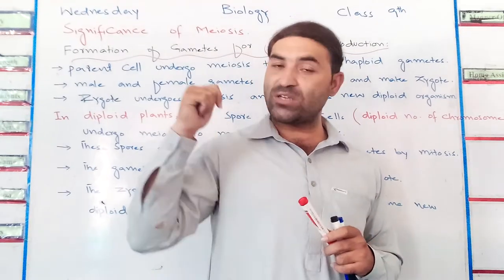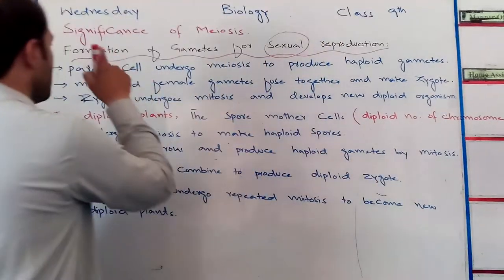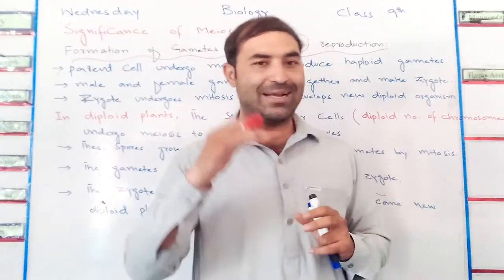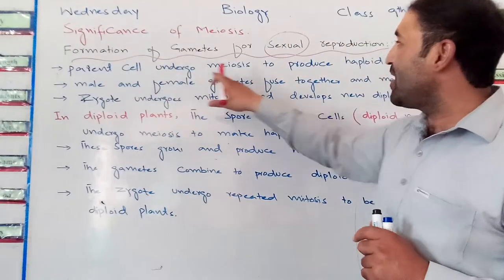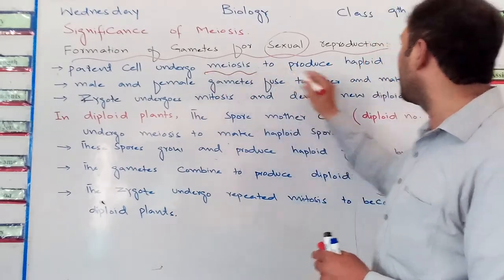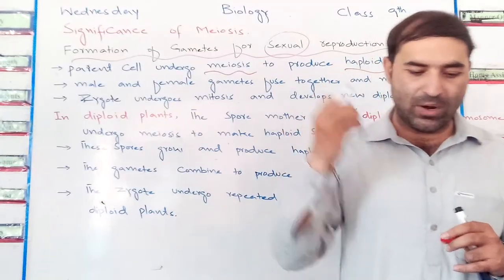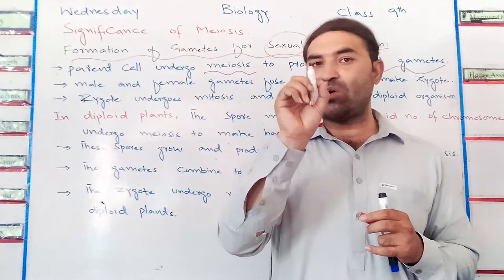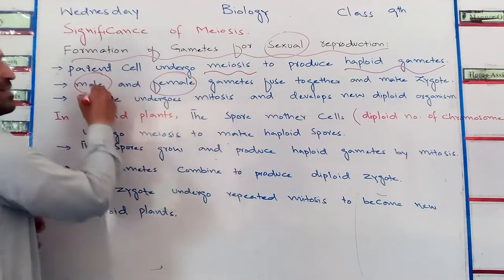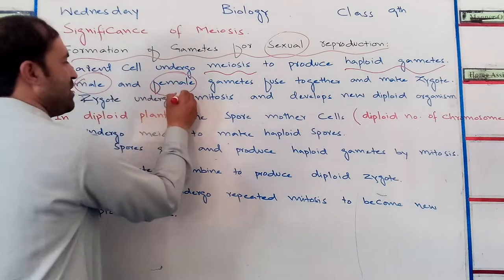Now, coming towards the formation of gametes in animals: the parent cell, which has a diploid number of chromosomes, undergoes meiosis to produce haploid gametes. These gametes are of two types — male gametes and female gametes. The male gamete is called sperm and the female gamete is called ovum.